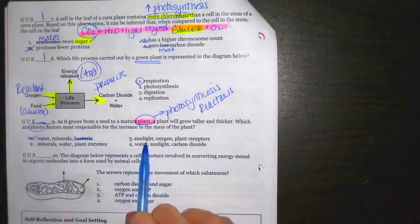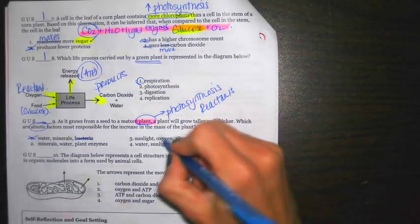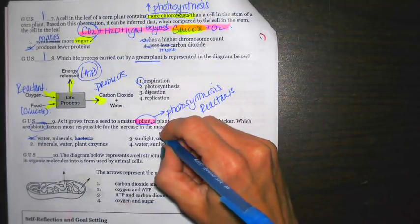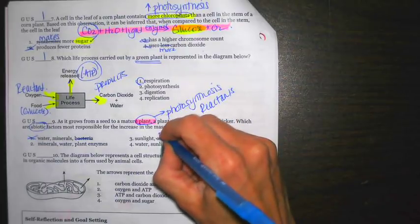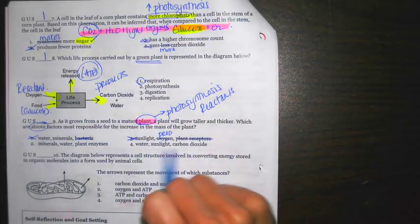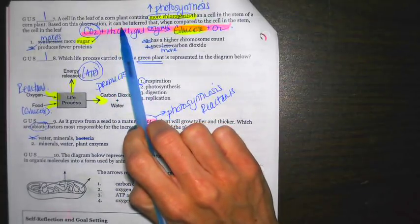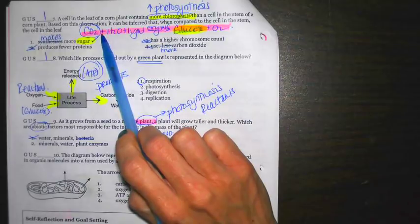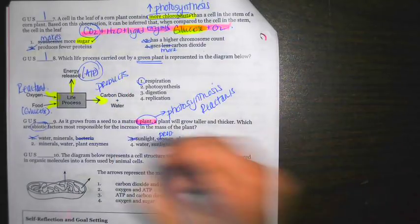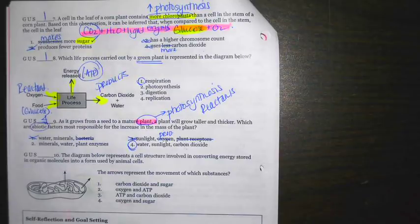Then after that, it says sunlight, oxygen, plant receptors. Plant receptors aren't going to have too much to do with photosynthesis. Oxygen is going to be an example of a product. So that's not going to make it bigger. Then it says water, sunlight, carbon dioxide. Again, I go up here to my formula. I've got water, sunlight, and carbon dioxide. That's going to be my best answer choice, number four. So again, you want to check all of them because two sounded like an okay answer, but the best answer was four.